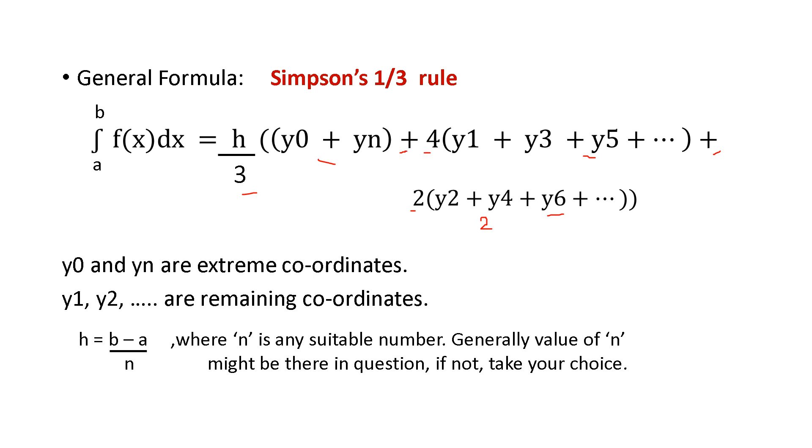Or else consider, take the odd one of y values. It is y1, y3, y5, y7, y9 and so on. And with 2, you have to add and multiply the even values. That is y2, y4, y6, y8 and so on.